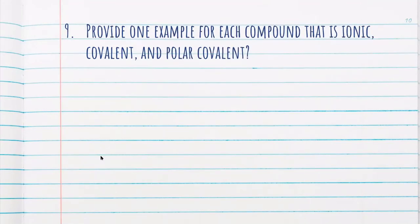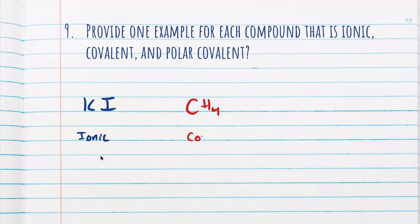Now let's list some examples for each type of bond. For my ionic bond, I'm going to choose potassium iodide — it's also used as a disinfectant. For my covalent bond, I'm going to choose methane. I just really like the tetrahedron structure it forms. And for polar covalent, I'm going to choose a really popular one — water, hydrogen monoxide. Try to come up with your own examples.